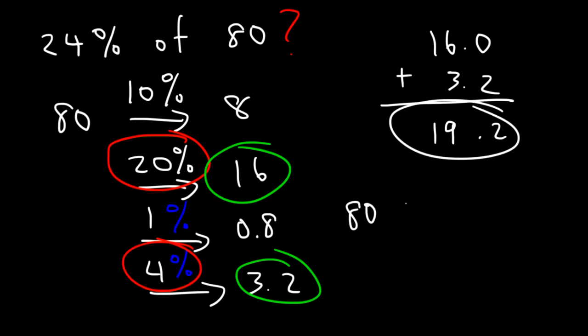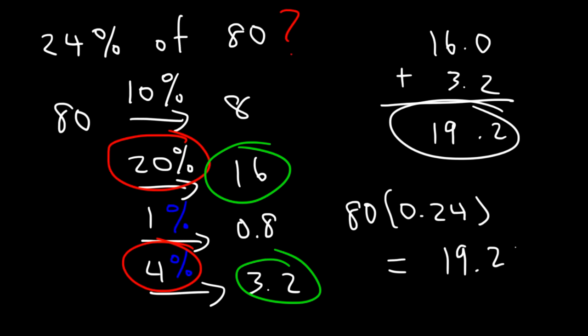If we multiply 80 by 0.24, this gives us 19.2. You can always check your answer with the use of a calculator to make sure you're doing it right.